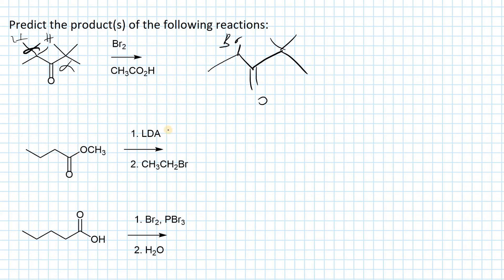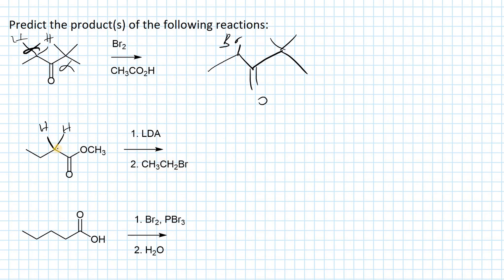In the second reaction we have an ester. The reagents are LDA (lithium diisopropyl amide) in the first step, followed by an alkyl halide with bromide as the leaving group. LDA is a very strong and bulky base, so it deprotonates the alpha position to form an enolate anion, which is a good nucleophile.